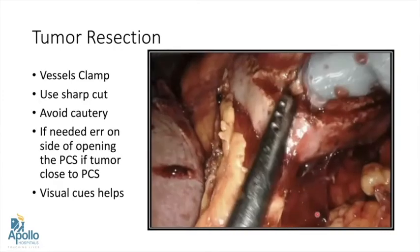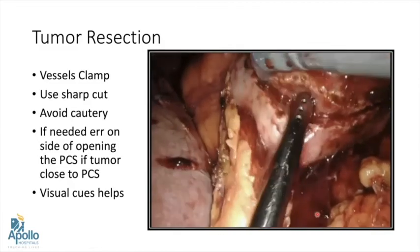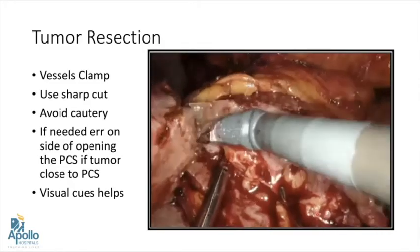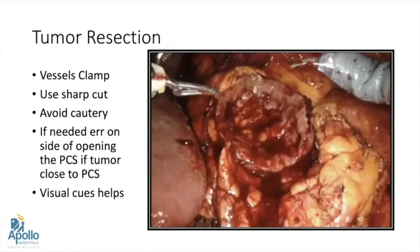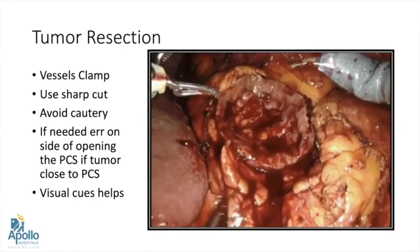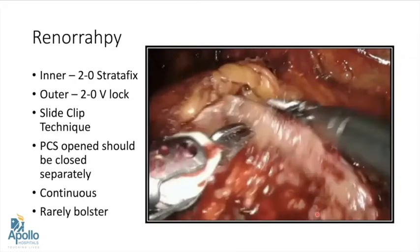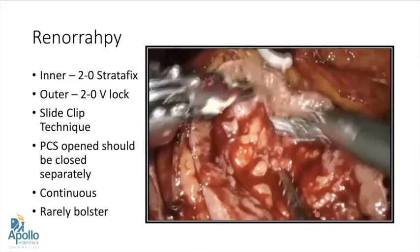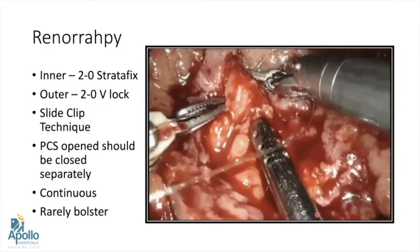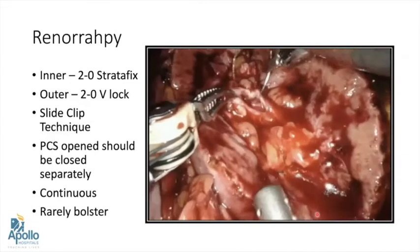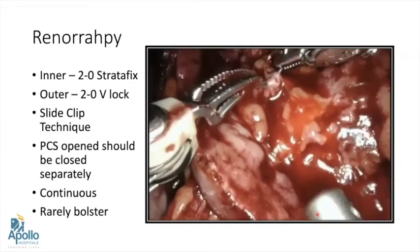Once demarcation is done, the next step is tumor resection. Vessels should be clamped depending on complexity — either artery alone or both. Sharp cuts should be used and the tumor resected all around. We should avoid using cautery if possible. If the tumor is close to the PCS, we should be ready to open the collecting system. Visual cues are very helpful during partial nephrectomy.